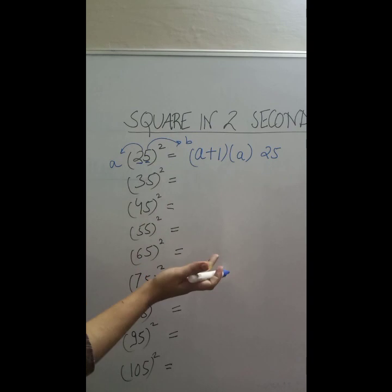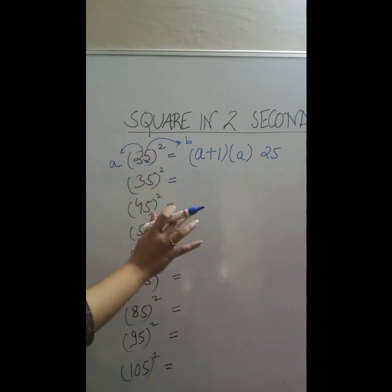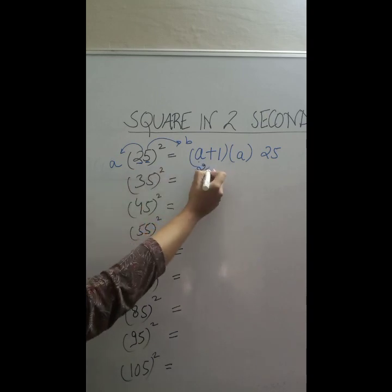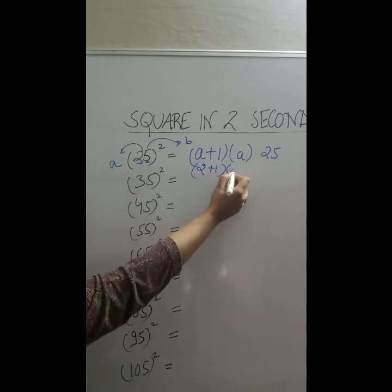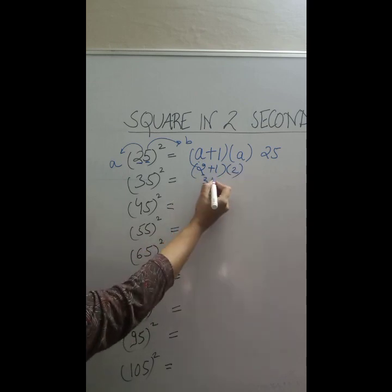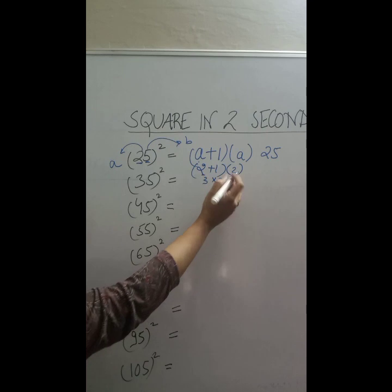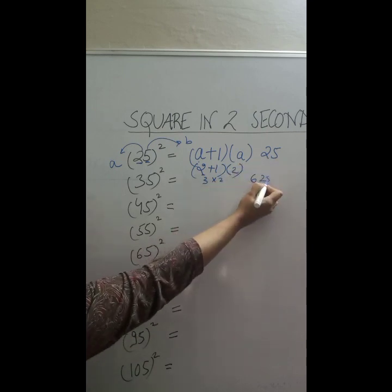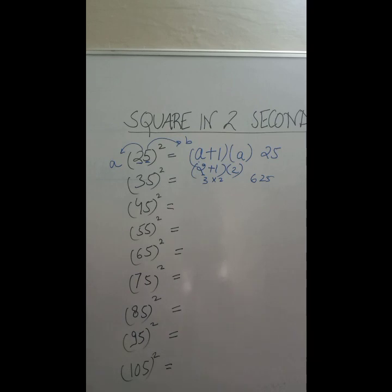The trick is very easy. I have written here just for your explanation, you can just do it verbally, you don't even require any external help. If I write a which is 2 plus 1, a is 2 so that means it's 3, 3 into 2 is 6, and immediately copy 25 here. So the answer would be 625.